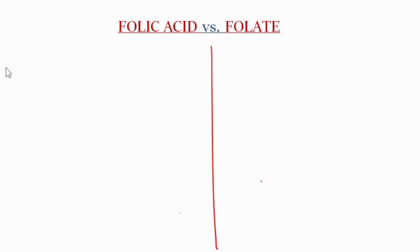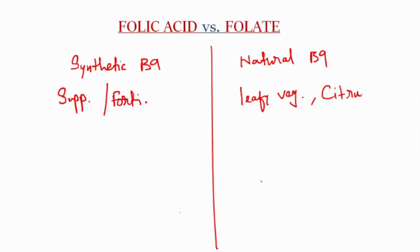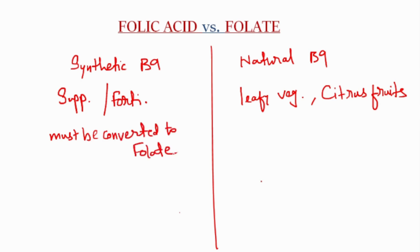Now we will see the difference between folic acid and folate. Folic acid is a synthetic form of vitamin B9, whereas folate is the natural form of vitamin B9. Folic acid is used for supplementation and fortification of food, whereas folate is present in green leafy vegetables, citrus fruits, whole grains, etc. Folic acid must be converted into folate, the active form, whereas folate is already an active form and is ready to use.